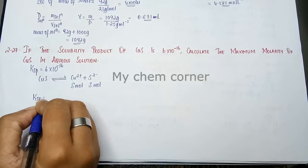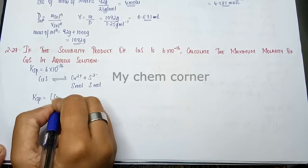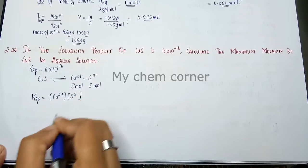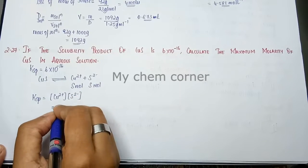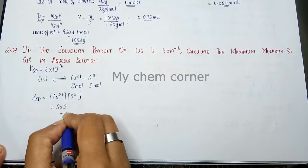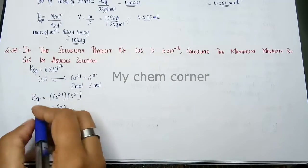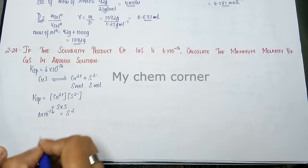So KSP is equal to concentration of Cu2+ into concentration of sulfide ion. This will be S into S which equals S square. Solubility product constant value is 6 into 10 to the power minus 16.